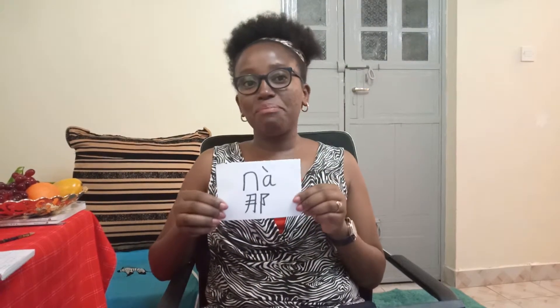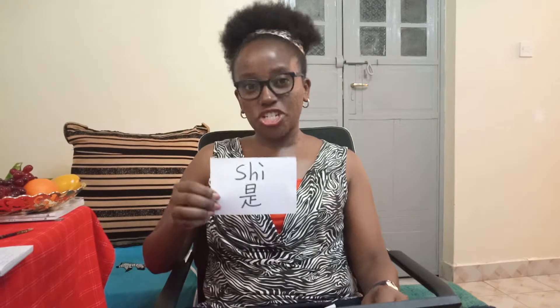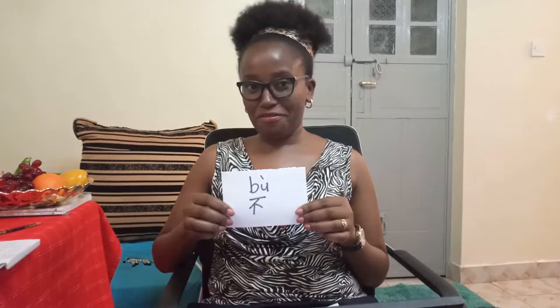'Na' means 'that.' Then we have 'shi' — 'shi' means 'is,' 'was,' 'are' — all of those are represented by 'shi.' Then we have 'bu' — 'bu' means 'no.' Anytime you want to refuse anything, you say 'bu.'